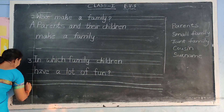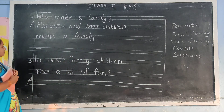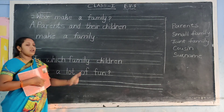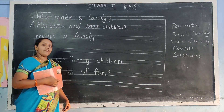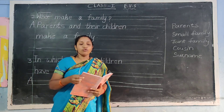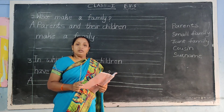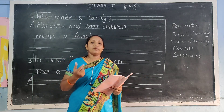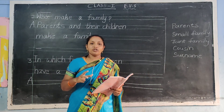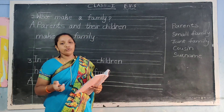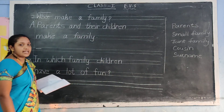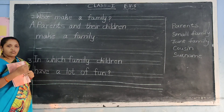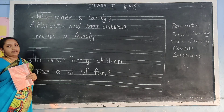Next slide. In which family children have a lot of fun? A family — we have fun, fond and happy. Enjoy. Big family. Joint family. We have a lot of fun. Small family. Joint family.